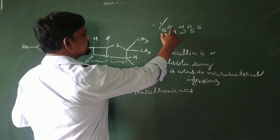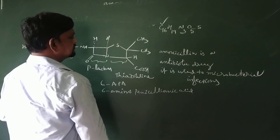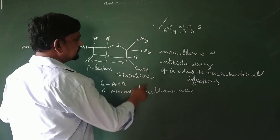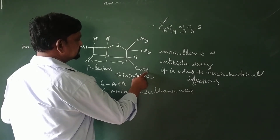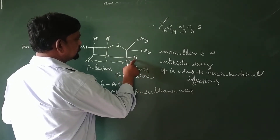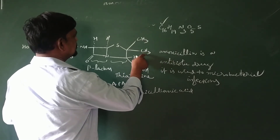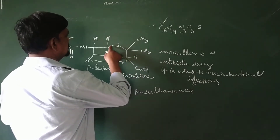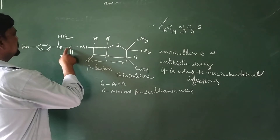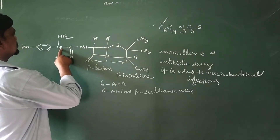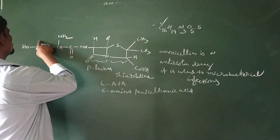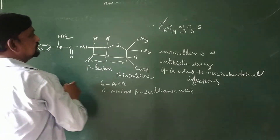Hydrogen is 19. Counting: 1, 2, 8, 9, 10, 11, 12, 14, 15, 16, 17, 18, 19 — hydrogen is verified by tallying.